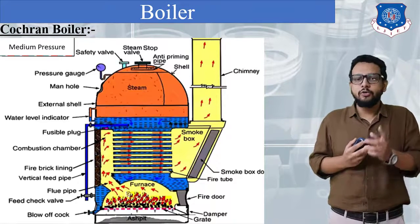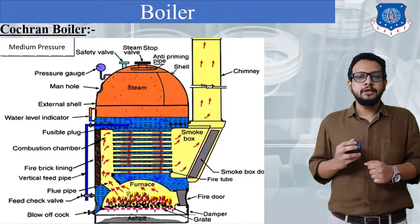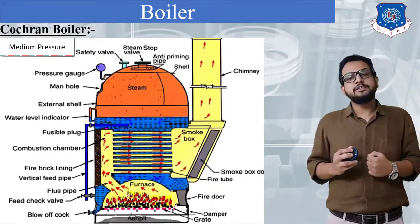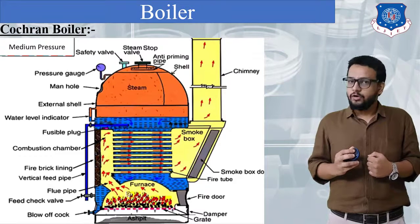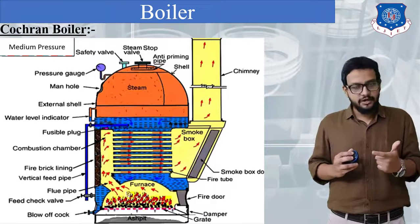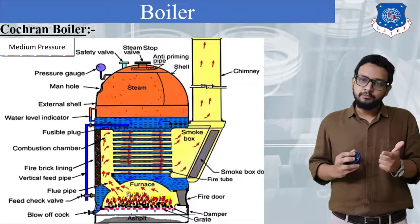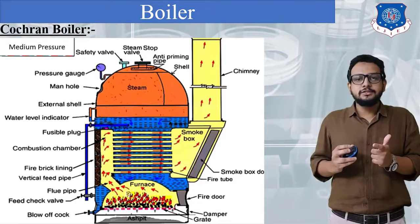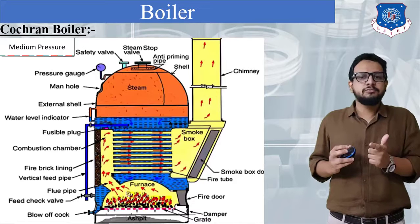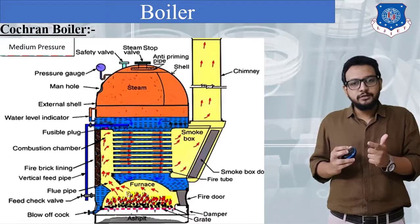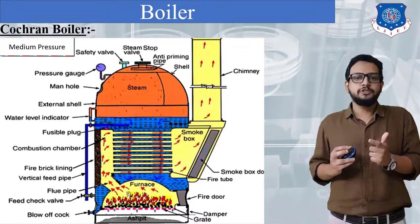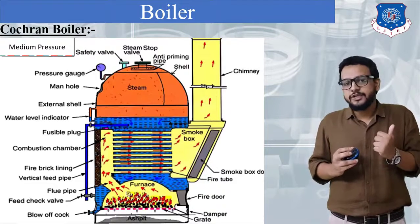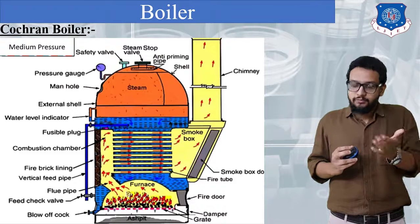First of all talking about orientation, you can clearly see that we will say it is a vertical boiler. Now you can see a furnace is provided inside the boiler shell, which means the second characteristic is it is an internally fired boiler. Next, you can see tubes are provided and there are more than one tube which means it is a multi-tube boiler, but these tubes are connected with the furnace which means hot gases will be flowing through the tube. So the classification will be fire tube boiler.